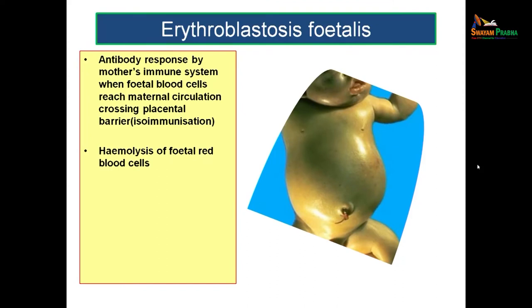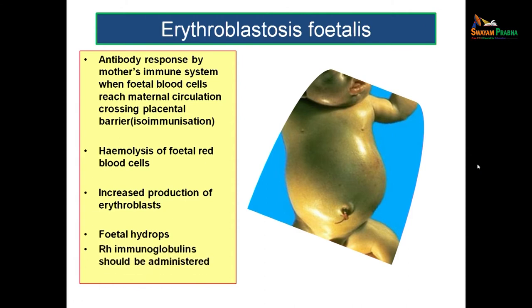As a result, there will be hemolysis of the fetal red blood cells, leading to increased production of erythroblasts in the fetus. Ultimately, the fetus will result in fetal hydrops — the body will be fully edematous. In this condition, we usually administer RH immunoglobulins to counter this reaction. To understand why this mechanism happens, you need to know how the placental barrier is formed in course of time.